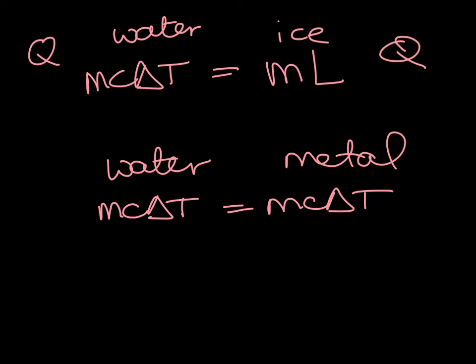These are two different ways that we could use calorimetry. We can use the heat gained by the water to find out how much energy was required to melt the ice, or we can use the heat gained or lost by the water to find out the heat gained by the metal. Either way, we can solve for our unknown variable, either C or L.